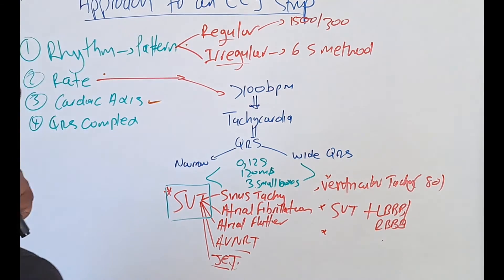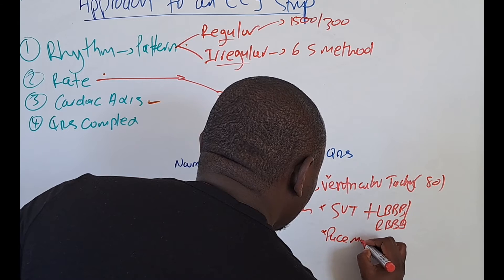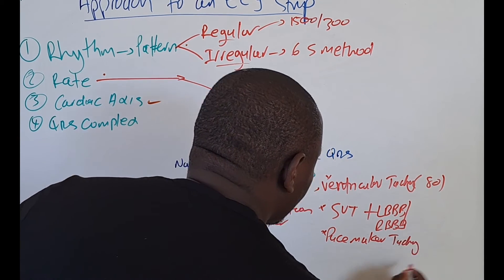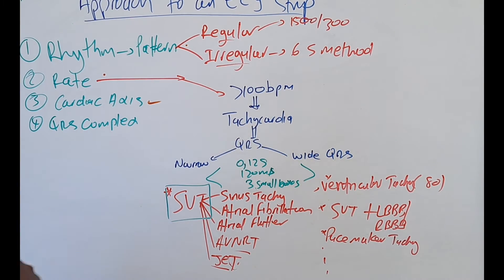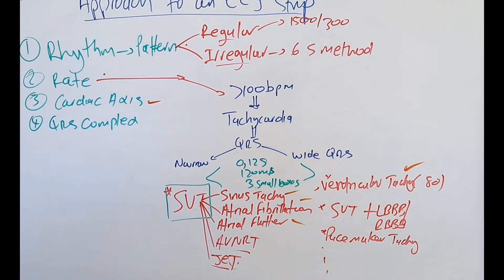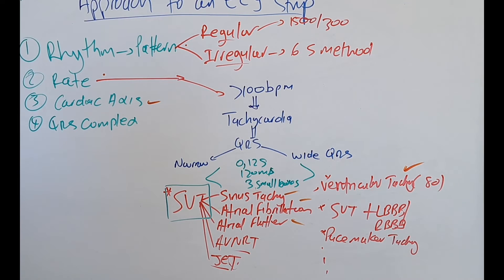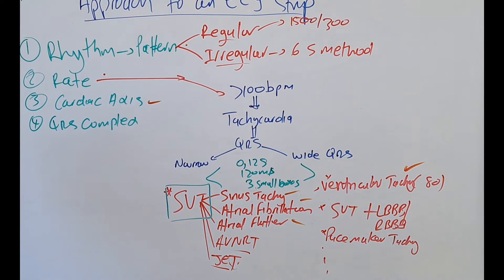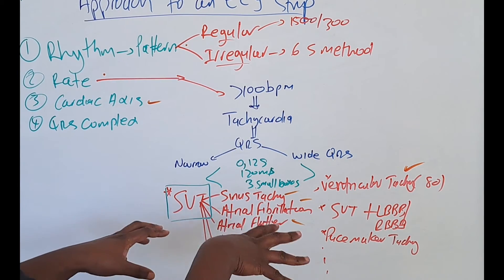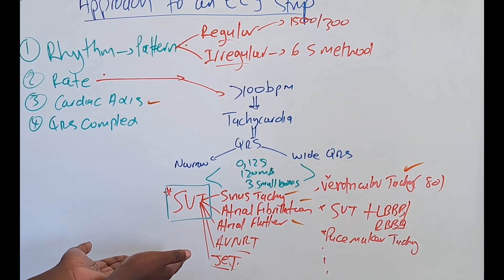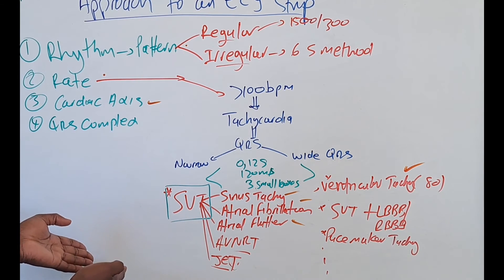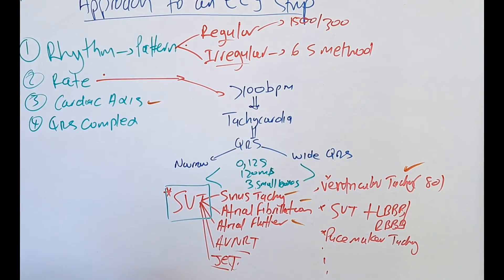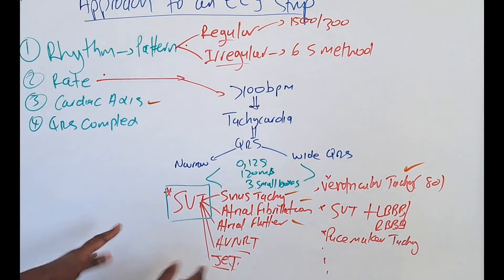One other cause of wide QRS tachycardia would be pacemaker tachycardia, and others. At our level, it's very important to know ventricular tachycardia because it's 80% common. It's important to know the SVT plus bundle branch block category. The other two are not really that important. This classification does get complicated, but I decided not to make it complicated for the purpose of understanding, because we are still junior doctors. You can further classify these categories into whether the heart rate is regular or irregular, with conditions under each.